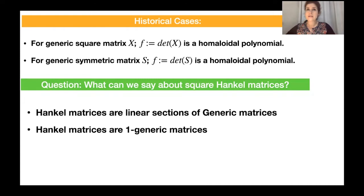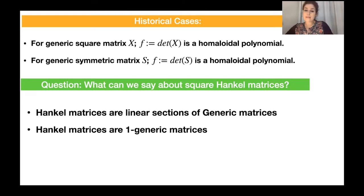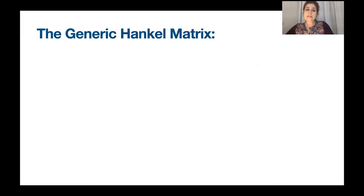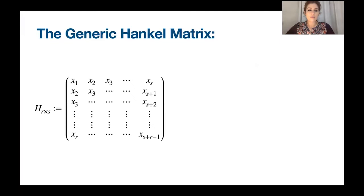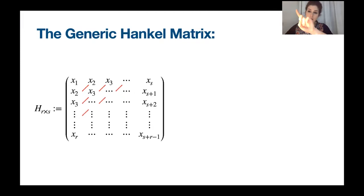Hankel matrices are linear sections of the generic matrices and have the property that they are 1-generic — meaning if you take any linear combination of the rows or columns, after doing these operations you don't get any zero entries. Because of this, we became interested in Hankel matrices. The generic Hankel matrix of arbitrary size r by s has the form where all variables on the anti-diagonal are the same; it is a super-symmetric or anti-diagonal matrix.